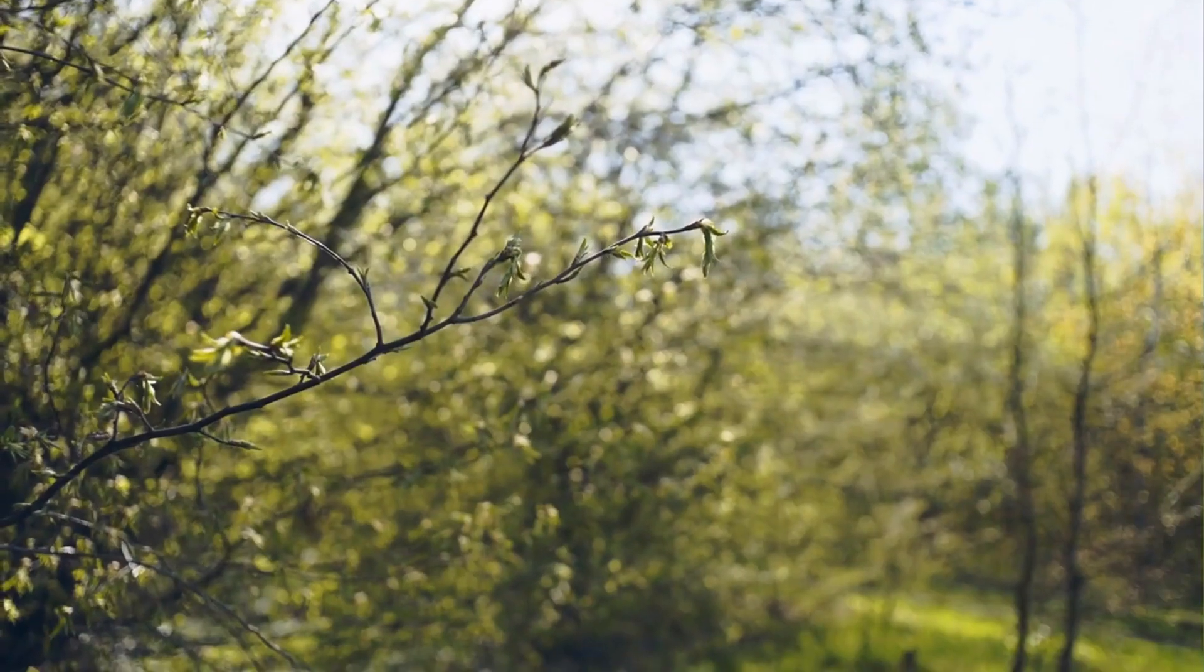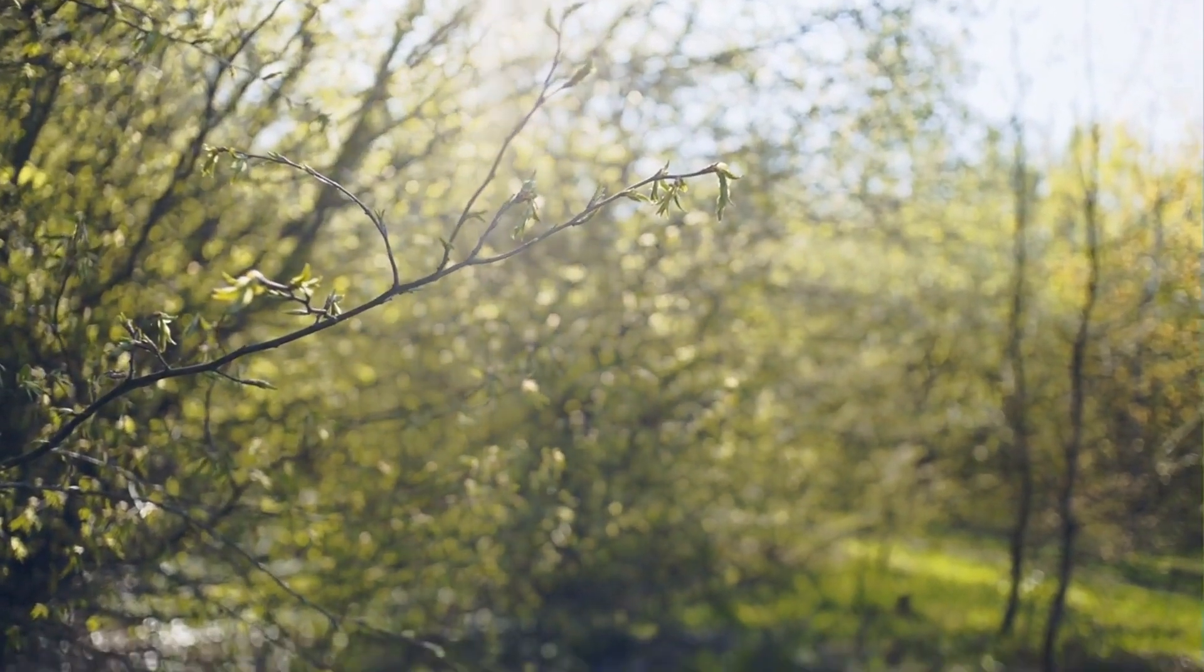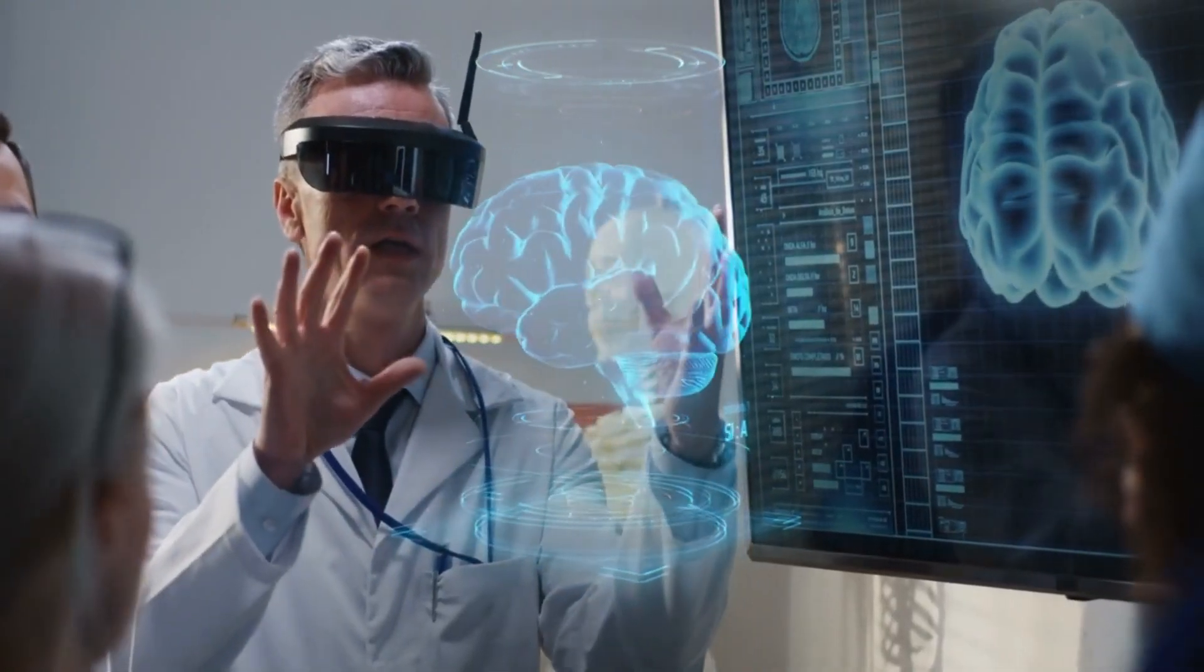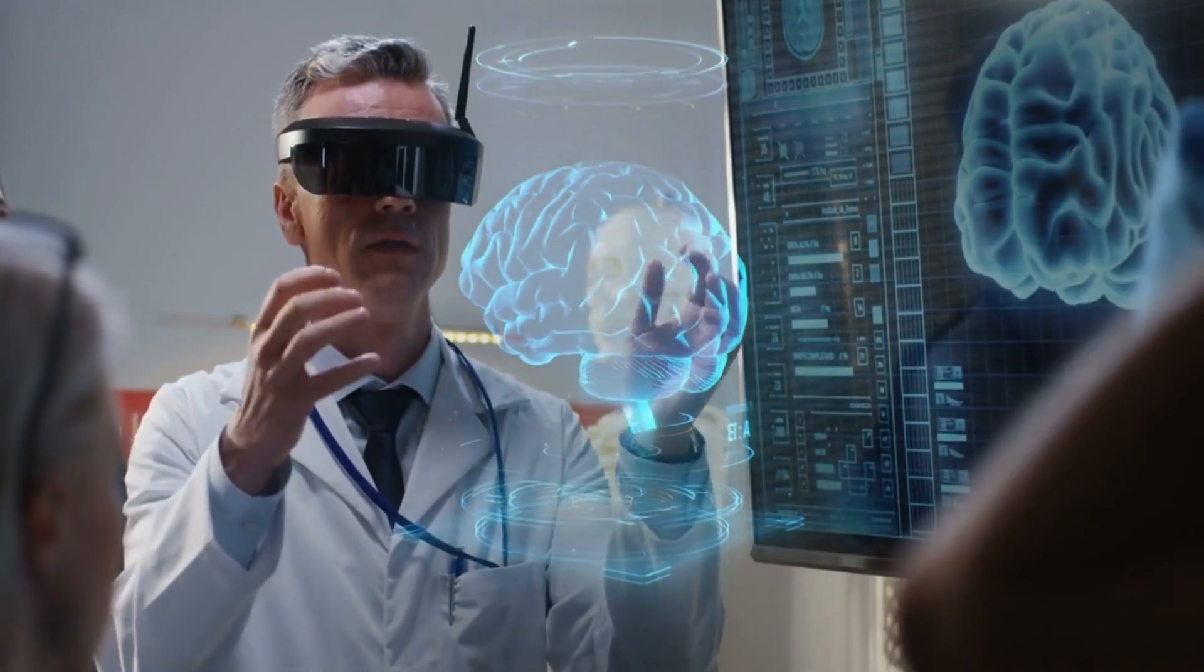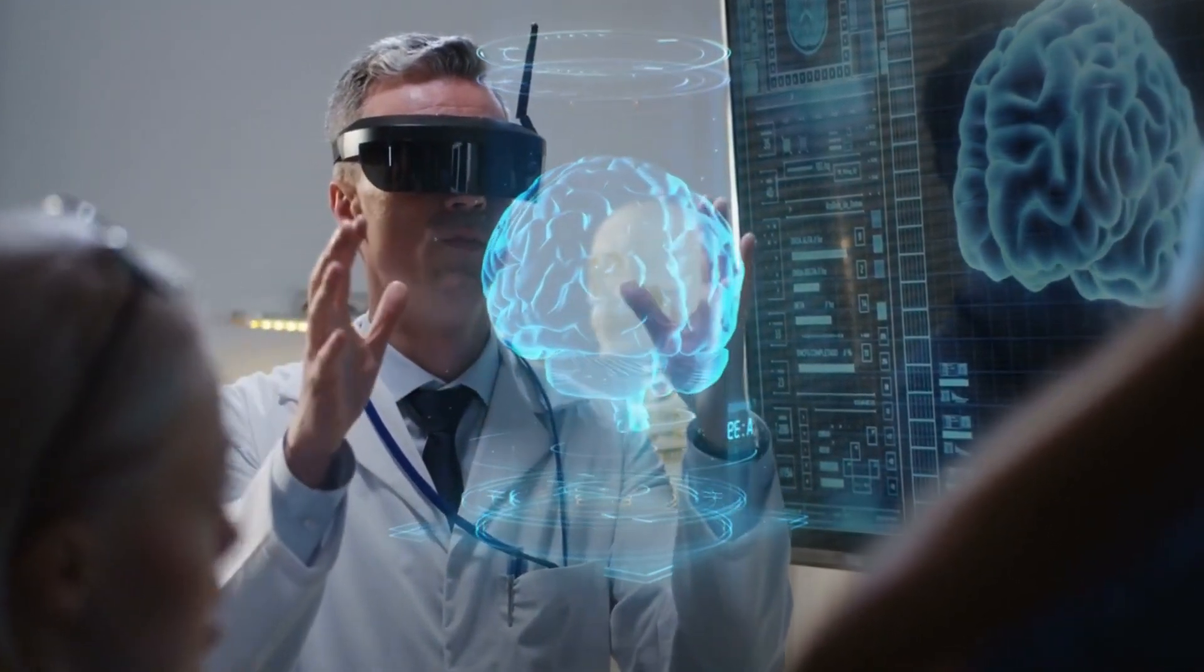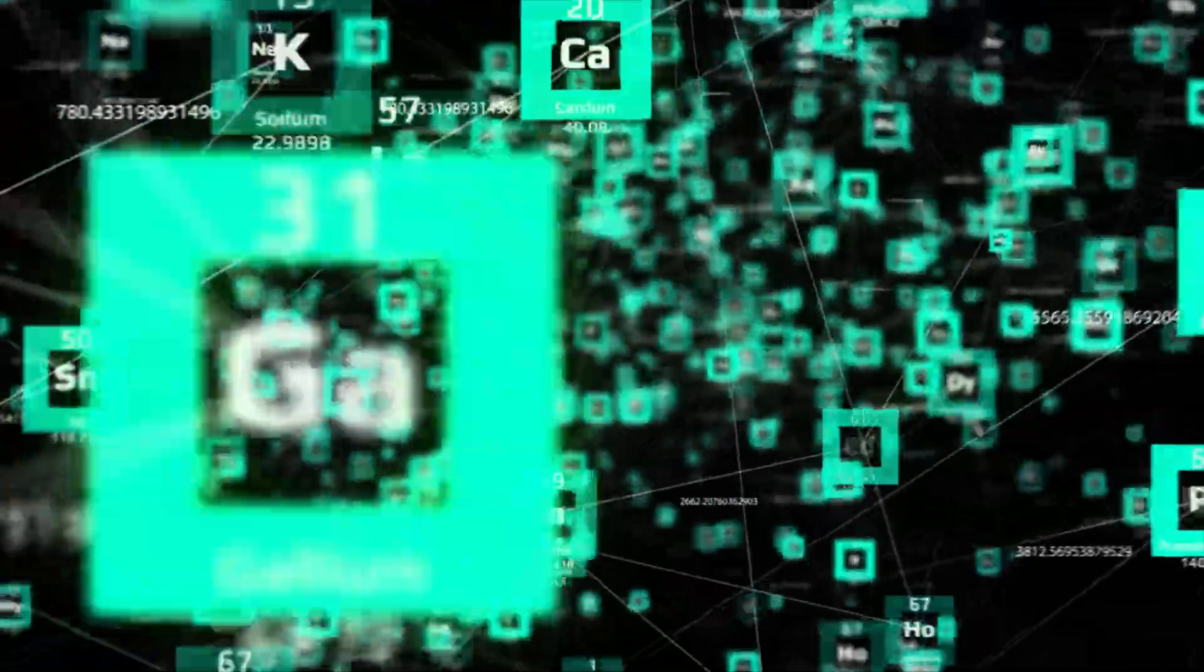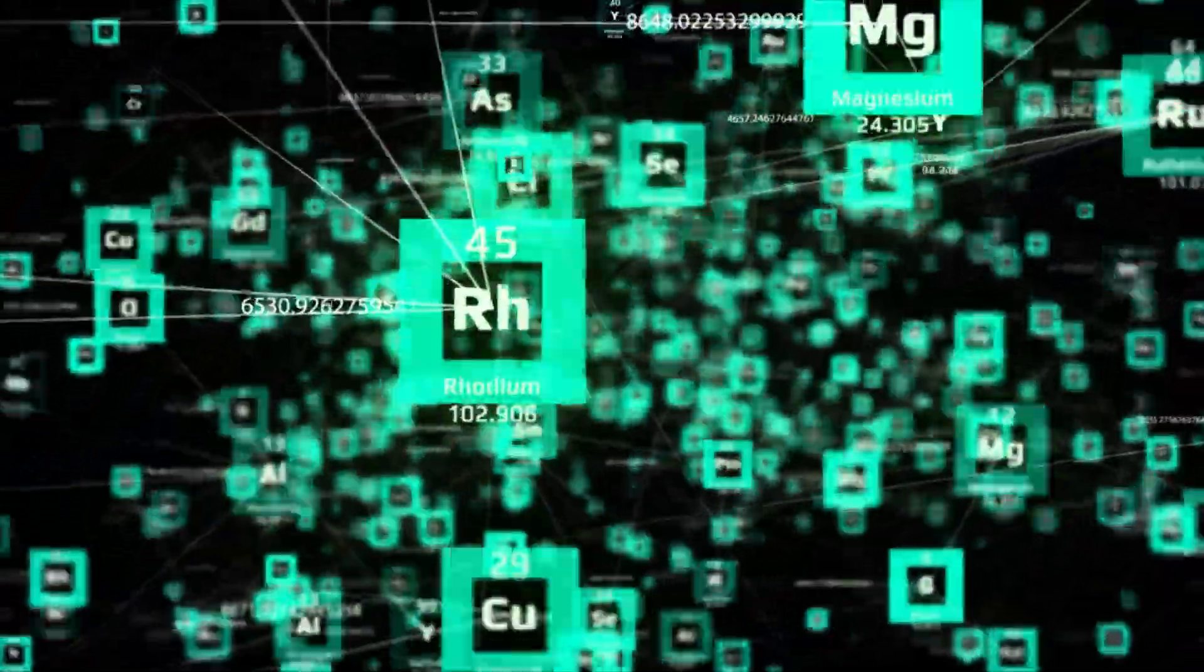This happens for every decision, every possibility, for every particle in the universe. Like an ever-branching tree of universes, each branch representing a different outcome. So in this view, all possible alternate histories and futures are not just theoretical. They exist in their own separate universes. It's a strange concept, but it's one of the ways scientists try to make sense of the strange world of quantum mechanics.